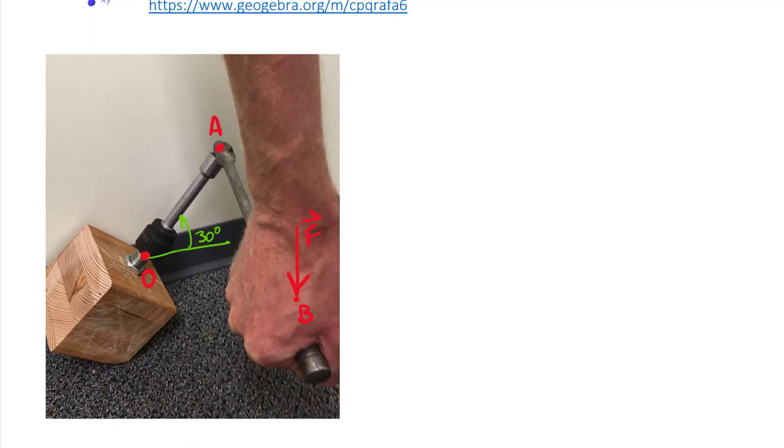That gives you some physical context of what we're talking about. The moment that we want to remove that bolt is along line OA. Any other moment that exists from us pushing down here at point B is not the moment we're looking for, it'll still exist, but we want to know how much moment we're getting here along line OA.